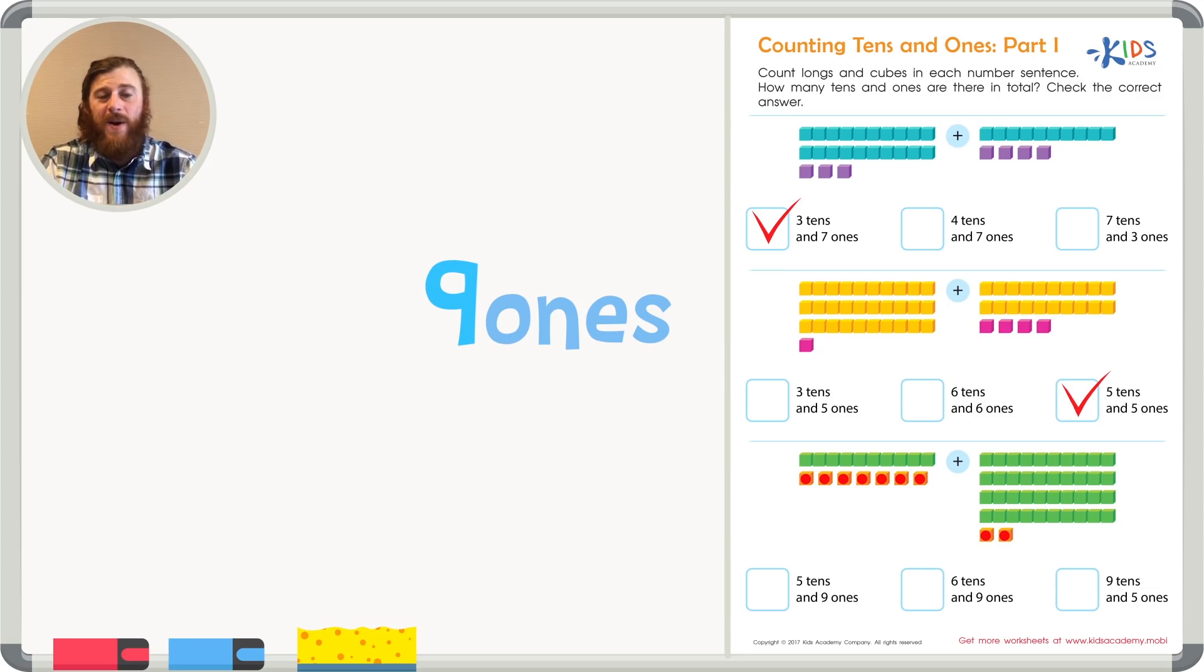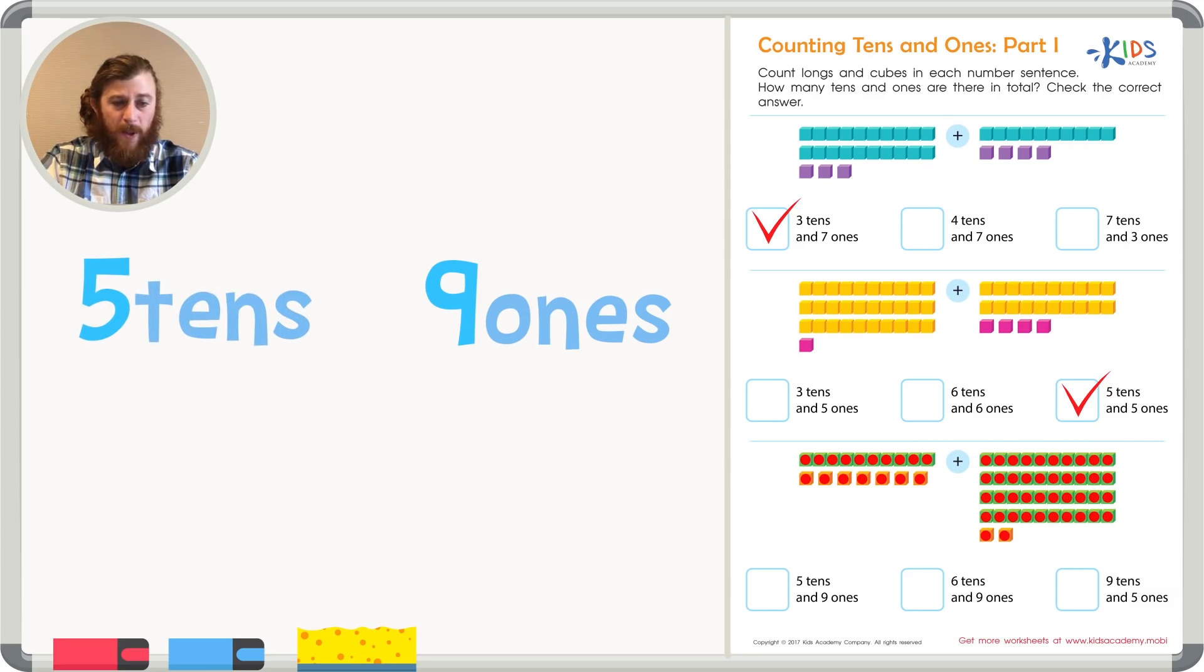Now, let's continue by counting the tens all together. I have one ten on the left side, and we'll continue counting on the right side: one, two, three, four, five. I have five tens, making our total five tens and nine ones, our first answer choice.